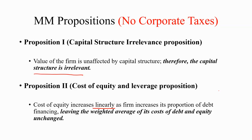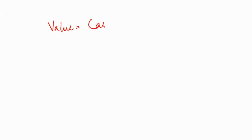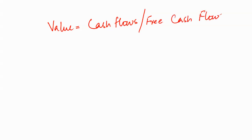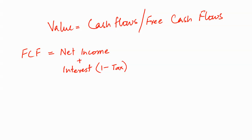In order to clarify both of these propositions, we first need to understand what actually is the value of the firm. In finance, value actually means the cash flows — or more specifically, free cash flows. Free cash flows, or FCF, are calculated as net income plus interest, less taxes, plus non-cash expenses, which might include depreciation as well as amortization, less capital expenditures for the year.